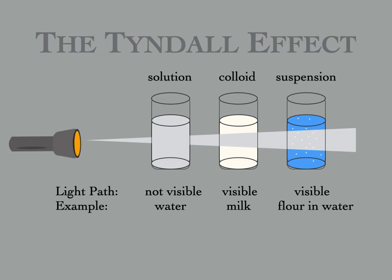In suspensions you can actually see the light beam dance off all those suspension particles. For example, flour in water — flour doesn't dissolve, so you can see the individual flour particles floating around and settling out, with light dancing off them like a disco show.